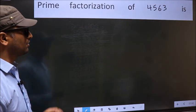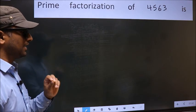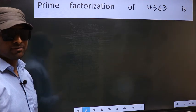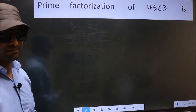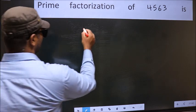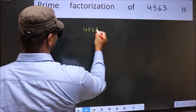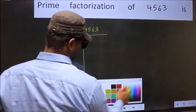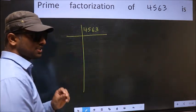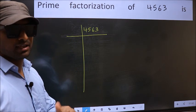Prime factorization of 4563. To do prime factorization, first we should frame it in this way. 4563. This is your step 1.